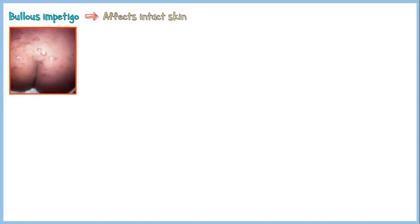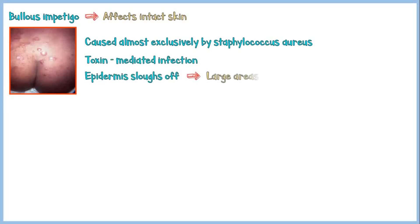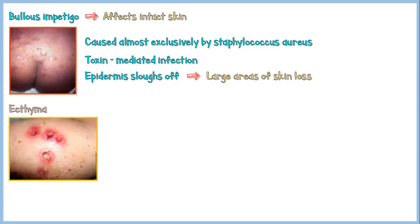Unlike the non-bullous form, bullous impetigo mainly affects intact skin and is caused almost exclusively by Staphylococcus aureus. It is a toxin-mediated infection where the epidermal layer of skin sloughs off, resulting in larger areas of skin loss. There is another form of impetigo which is more severe and less common, called ecthyma — a much deeper ulcerated infection, often occurring with lymphadenitis.